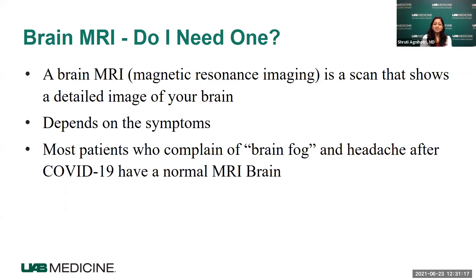Another common question is: do I need a brain MRI? An MRI of the brain gives us a very good, detailed image of the brain. We make that decision based on symptoms and largely on what we find on our exam. For most patients who complain of brain fog or headache, they tend to have a normal MRI. For most patients, we do not find anything worrisome on the brain MRI. As bothersome as these complaints are, we do not find anything worrisome on the scan.